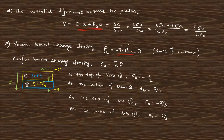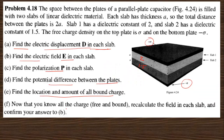The next question asks to find the location and amount of bound charges. The volume bound charge density is zero since P is constant. For the surface charge density, in slab 1 the normal and electric field are in opposite directions, giving minus sigma/2. For slab 2 it is in the same direction giving plus sigma/3. So the induced bound surface charge densities are confirmed.